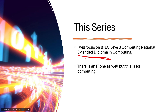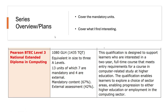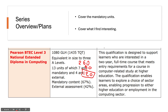The Certificate and Extended Certificate give you fewer equivalent A Levels. So for the series overview, I will cover the mandatory units and then the other units I find interesting. If people tell me they need unit 5 or 6, I'll go back and do those. Here's a breakdown: you have 1080 guided learning hours, 1435 total qualification time (TQT). The equivalent is 3 A Levels. There are 13 units in total, 7 of which are mandatory and 4 are external. Two of the 7 units are double units — normally 60, 90, and 120 — which is why it adds up to 7. The mandatory content is 67% and the external content is 42%.